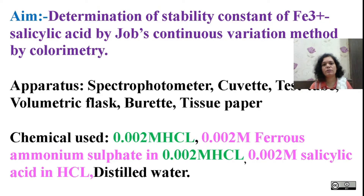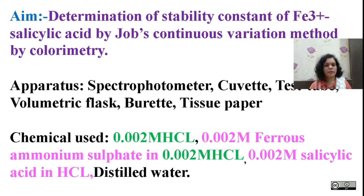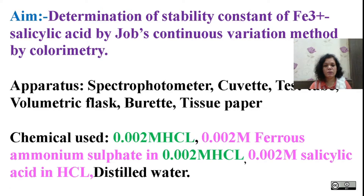The chemicals we are going to utilize during this experiment are 0.002 molar HCl and 0.002 molar ferrous ammonium sulfate in 0.002 molar HCl. You are going to prepare the ferrous ammonium sulfate in HCl solution. You will weigh the required amount, do the back-end calculation, and dissolve it in the prepared 0.02 molar HCl solution.